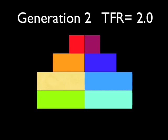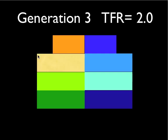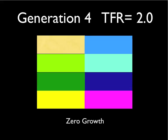We've moved forward another generation. The sides of the pyramid are getting straight and vertical. These kids have moved up — they're only going to replace themselves. We go to generation four. Now we're at zero growth. The pyramid isn't a pyramid anymore; it's a rectangle.